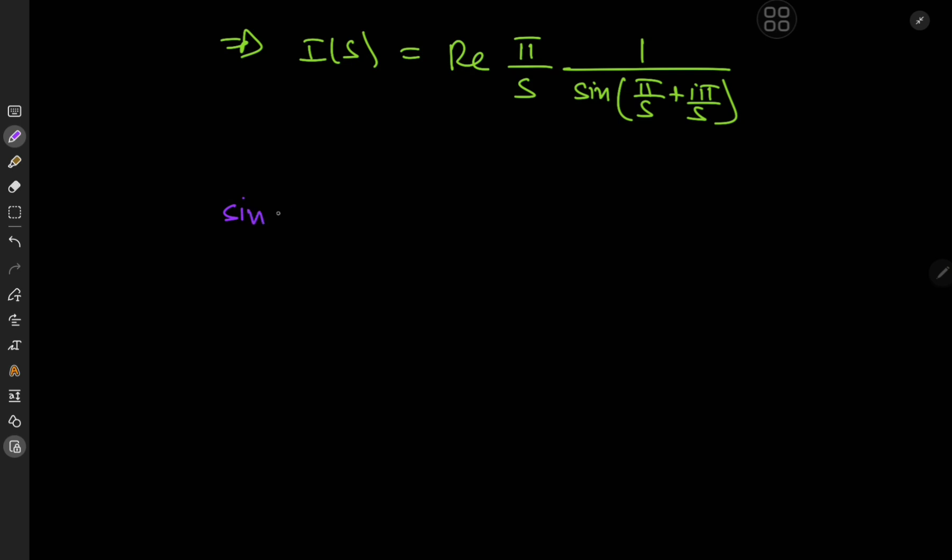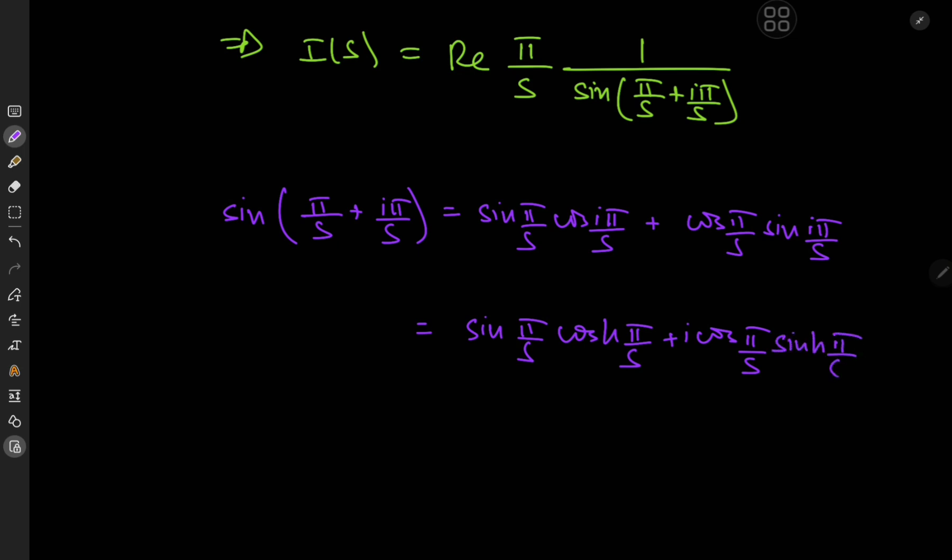So we can expand this using the addition formula for the sine function. We have sine pi by s times cosine i pi by s plus the cosine of pi by s times the sine of i pi by s. And the cosine of i times z is the hyperbolic cosine, or the cosh of z. So we have sine pi by s times the cosh of pi by s plus cosine pi by s times i times the sinh of z.